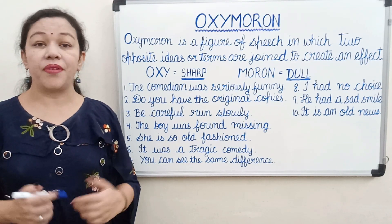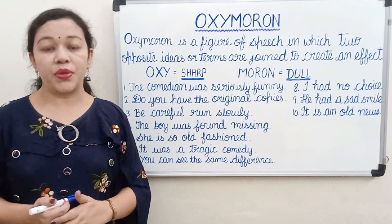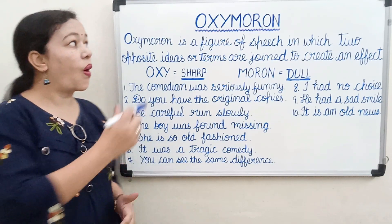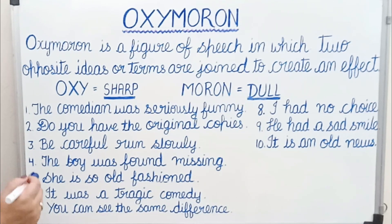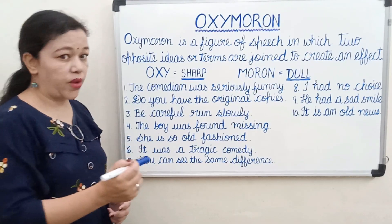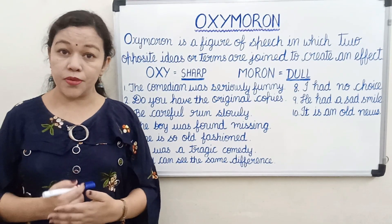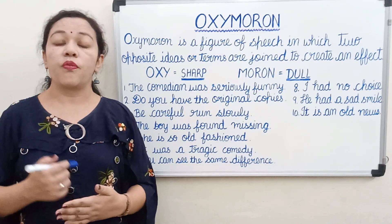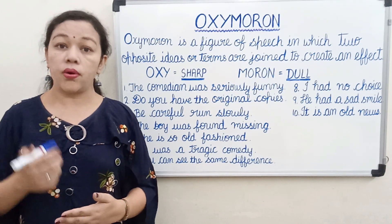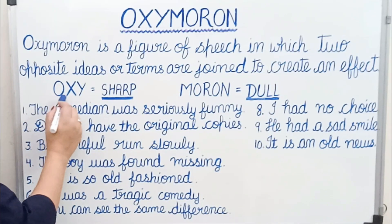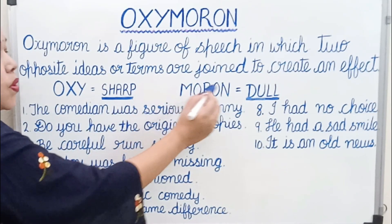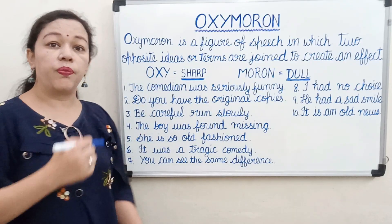Hello everyone and welcome back to my channel. Today I am going to explain oxymoron. Oxymoron is a figure of speech in which two opposite ideas or terms are joined to create an effect. The word oxymoron is derived from two ancient Greek words: oxy plus moron, in which oxy means sharp and moron means dull.